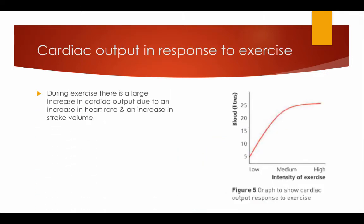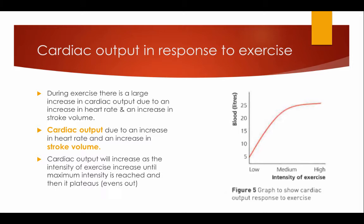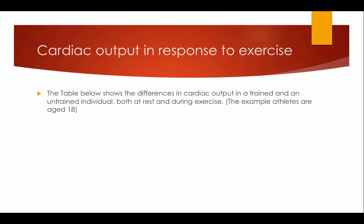Cardiac output in response to exercise. During exercise, there is a large increase in cardiac output due to an increase in heart rate and an increase in stroke volume. Cardiac output will increase as the intensity of exercise increases until maximum intensity is reached, and then it plateaus. As shown on the graph, cardiac output increases until it reaches its maximum — around 24 litres per minute in this case — then plateaus.